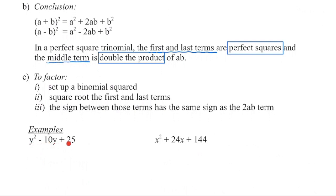For the trinomial y squared minus 10y plus 25, there is no greatest common factor. The first term is a perfect square, the last term is a perfect square. Square root y squared to get y, square root 25 to get 5, so 1 times 5 is 5, doubled is 10 — this matches the middle term. So it is a perfect square trinomial. Square root y squared to get y, square root 25 to get 5, and the sign is negative. Checking: y squared, negative 5y minus 5y is negative 10y, and negative 5 times negative 5 is positive 25. These are not conjugates because both signs are minus — it is a binomial squared.